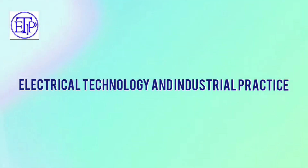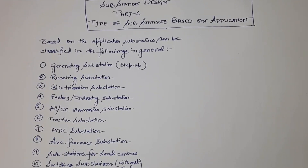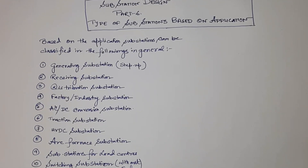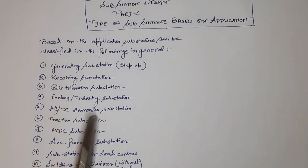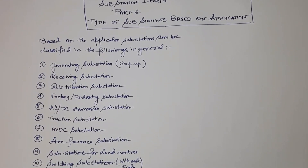In the second part of this series we discussed substation classification based on location: outdoor substation, indoor substation, or hybrid type substation. Now in this video we will be discussing substations as per their application. Based on application, substations can be classified into the following 10 categories in general.